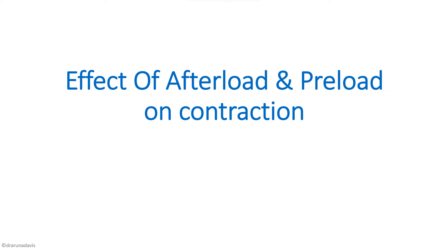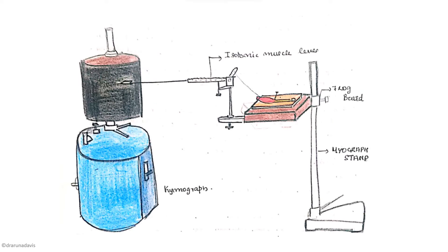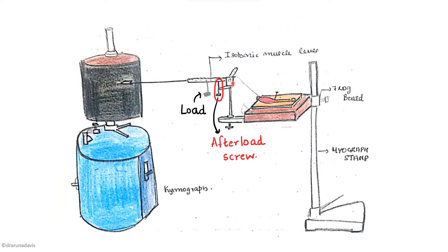The next experiment is the effect of afterload and preload on contraction. The only difference in the experimental setup is that we apply a load on the isotonic muscle lever, so the muscle will have to contract along with this load. We will increase the load and take muscle contractions, and after that we will remove the afterload screw so that the load will act on the muscle even before contraction, converting the setup from afterload to preload.